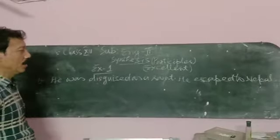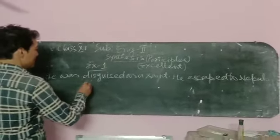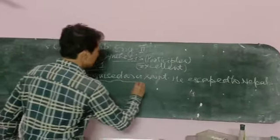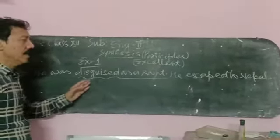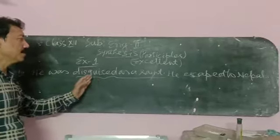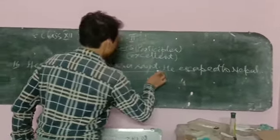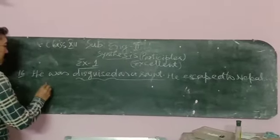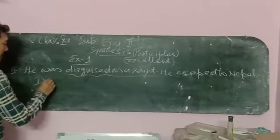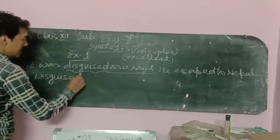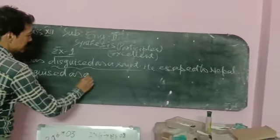He was disguised as a saint, he slipped to Nepal. Now you see, past participle group mein yahan disguised word aaya jo poora phrase ka kaam kar raha. Disguised as a saint matlab ek sanyasi ka bhes rakhte huye he escaped to Nepal. So pehle sentence ke liye the jo past participle ka phrase hai, disguised as a saint.